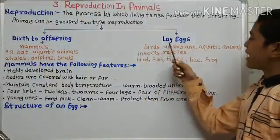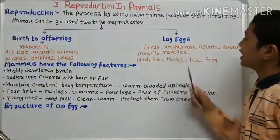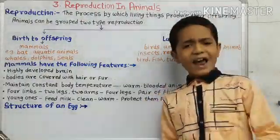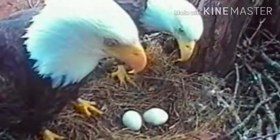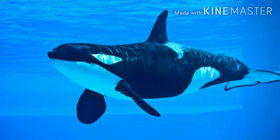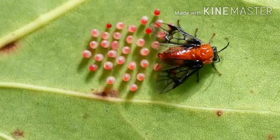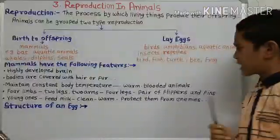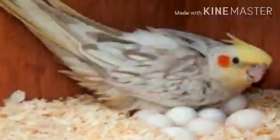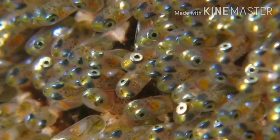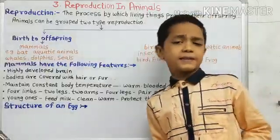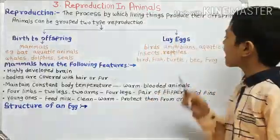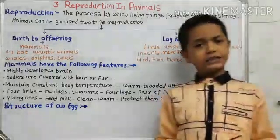Now let's study the animals which lay eggs. Animals which lay eggs include birds, amphibians, aquatic animals, insects, and reptiles. Examples are birds, fishes, turtles, bees, and frogs.